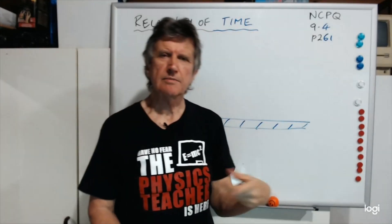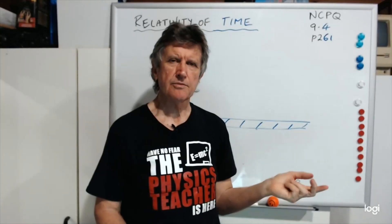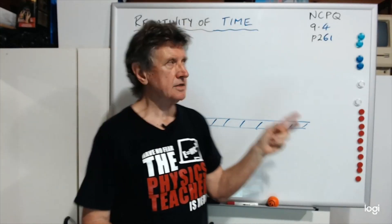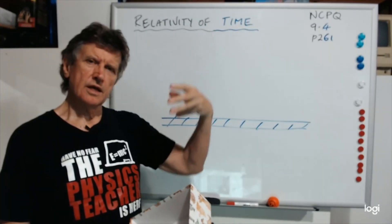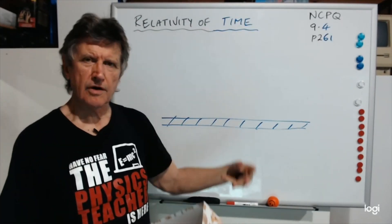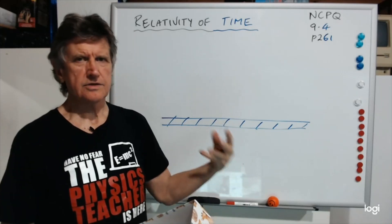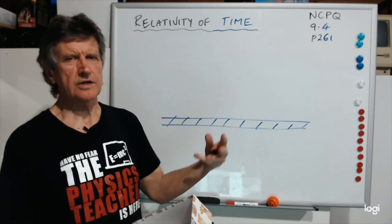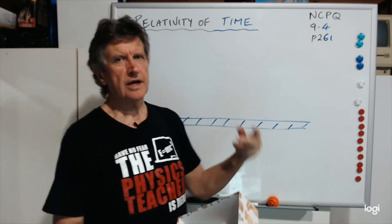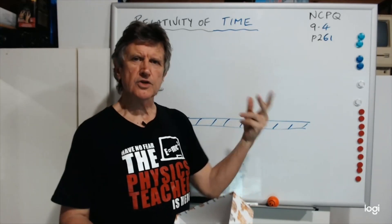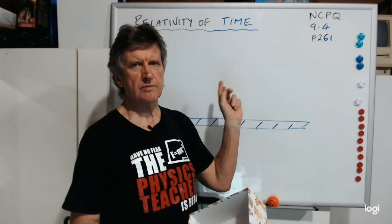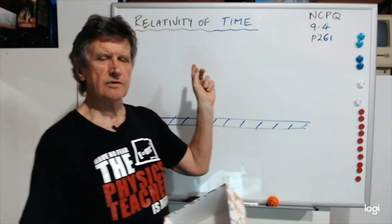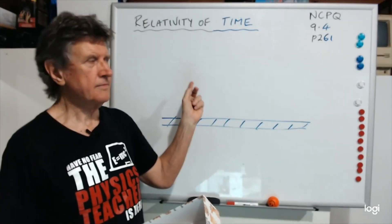Now you might remember when I discussed the muon experiment: for observers on the ground, that is the scientists on the ground, they were measuring 23 microseconds as the lifetime — the average lifetime of a muon.